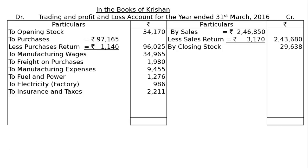Then next is to insurance and taxes — factory portion only — and rent of the factory Rs. 1,440. Then to general expenses relating to manufacturing that is Rs. 4,800. As per adjustment 5, three-fifths of insurance, taxes, rent, and general expenses are charged to the factory, and the balance two-fifths goes to the office.